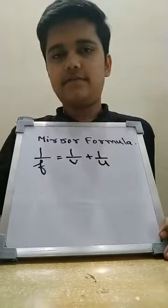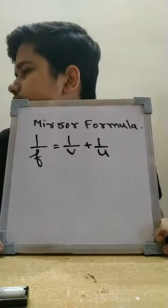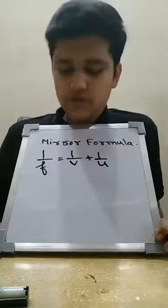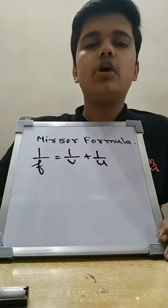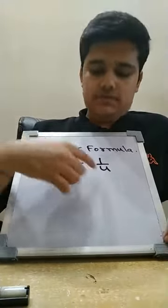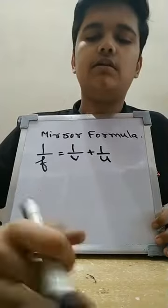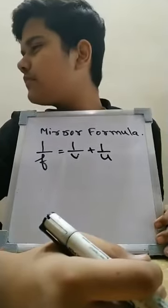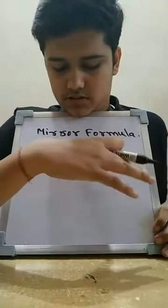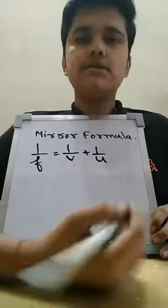In the mirror formula, F is the focal length — the distance between the optical center and the focus. V denotes image distance and U is the object distance. I'll explain these terms with a diagram. Image distance is called V and object distance is called U, and this relation is formed.